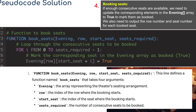Next we have another function for booking the seats - step four. If enough consecutive seats are available, we update the corresponding elements in the evening array to true to mark them as booked. I'm using a function called 'book_seats' with parameters: 'evening' (the array), 'row' (the index of the row where booking starts), 'start_seat' (the first available seat), and 'seats_required' (how many seats - one, two, three, or four).